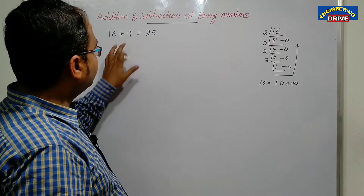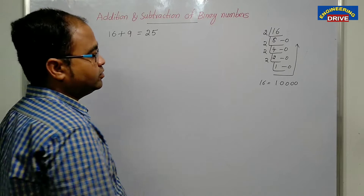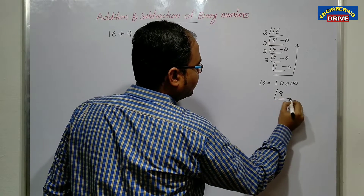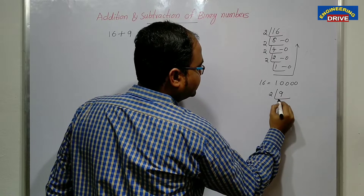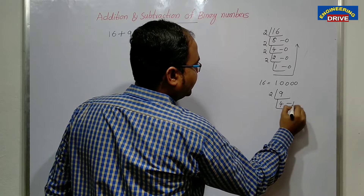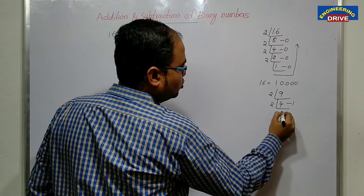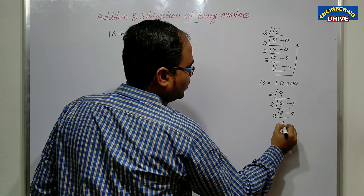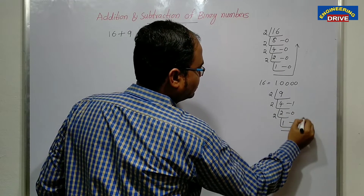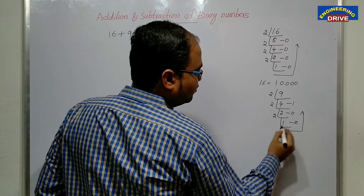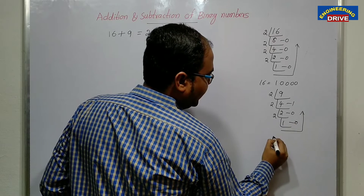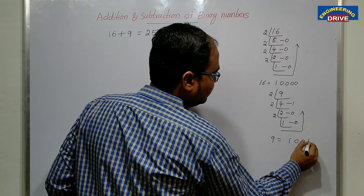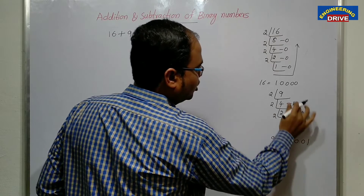Now let us find out the binary form of 9. Dividing 9 by 2 repeatedly: 9 ÷ 2 remainder 1, 4 ÷ 2 remainder 0, 2 ÷ 2 remainder 0, 1 ÷ 2 remainder 1. So the binary form of 9, from bottom to top, is 1 0 0 1.